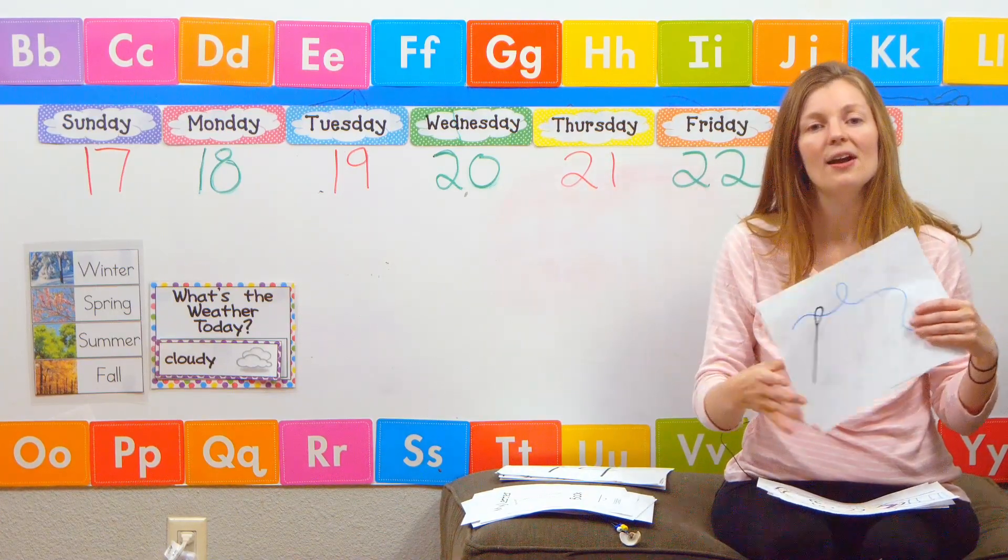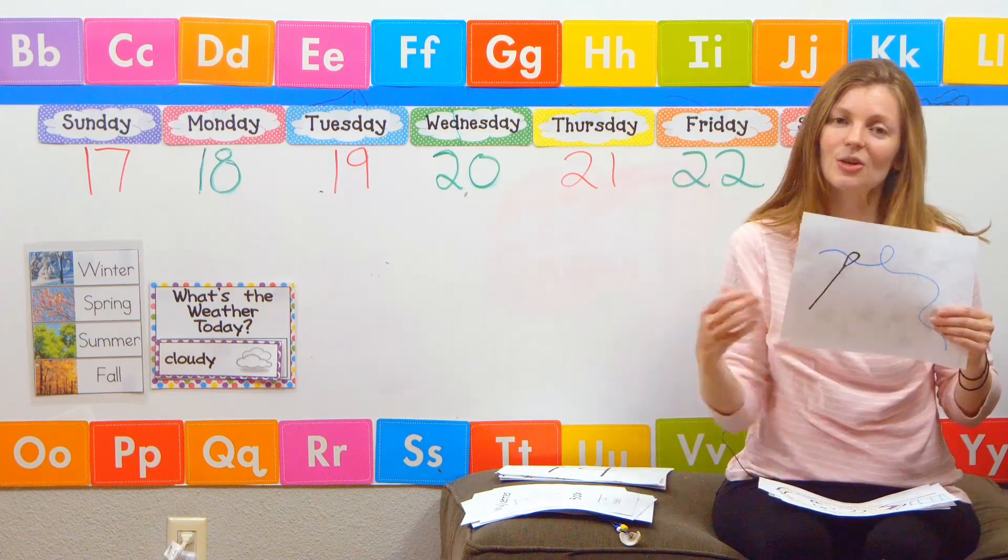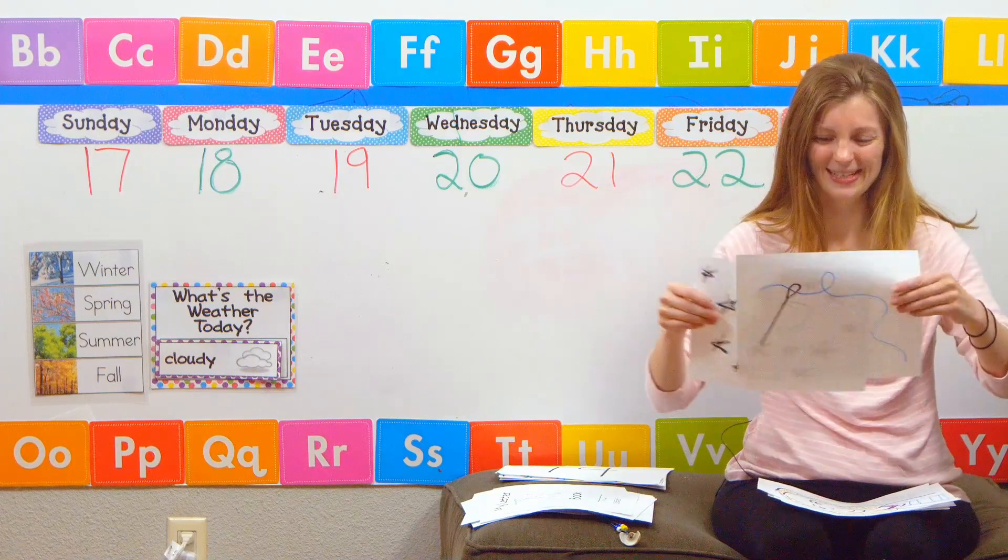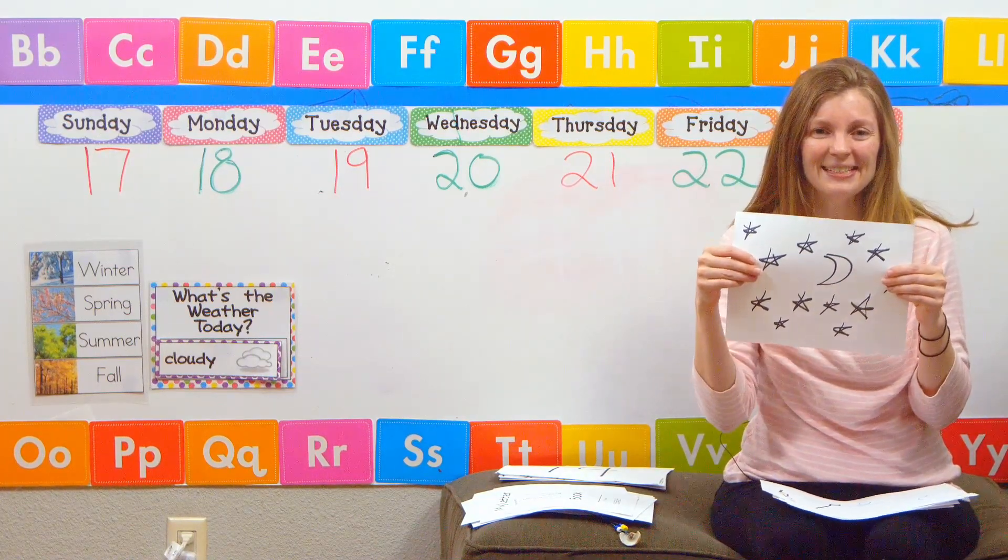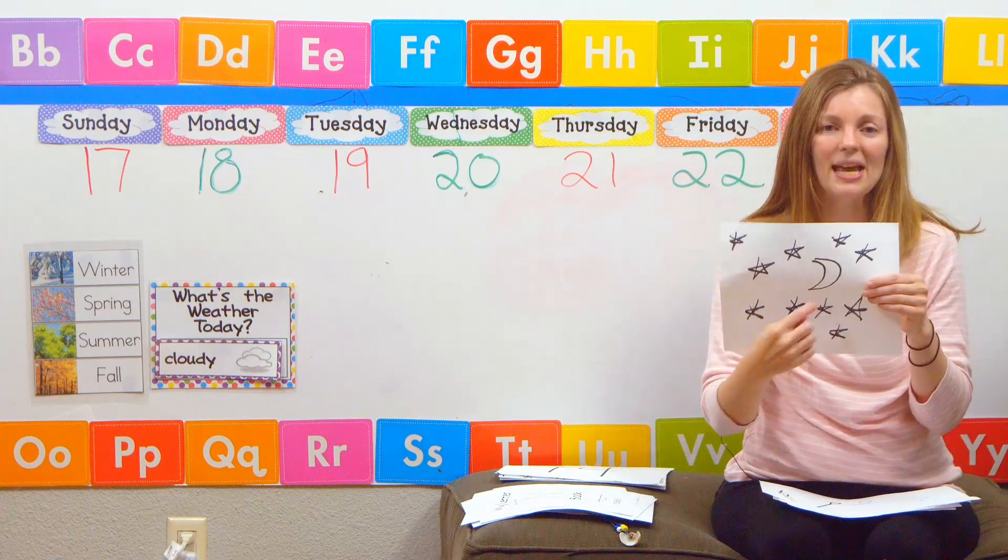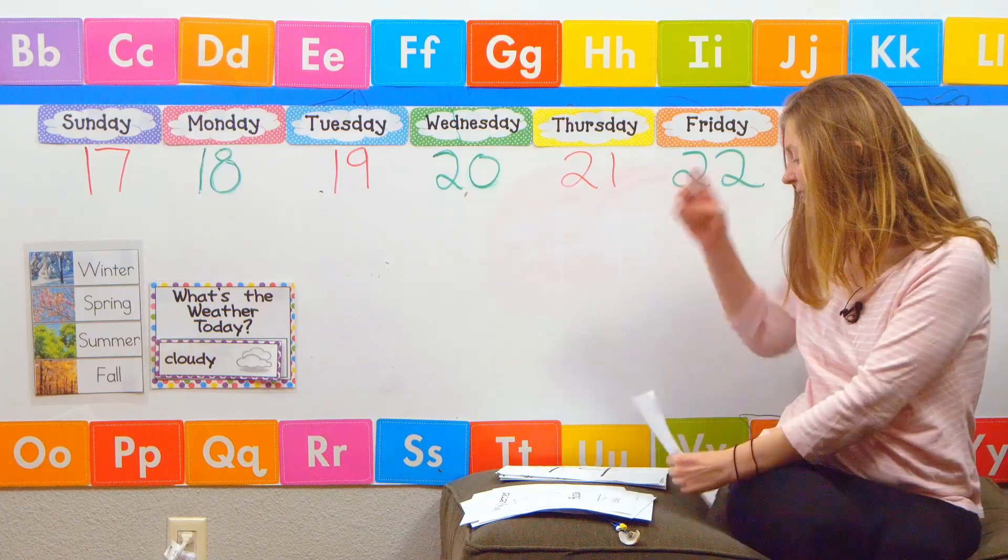N is for na na needle. Like my grandma likes to sew. Do you have a grandma that likes to sew? N is for na na night. And I have my stars and my moon for my na na night. All right.